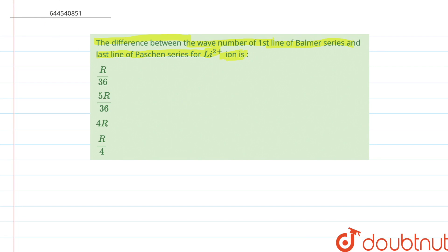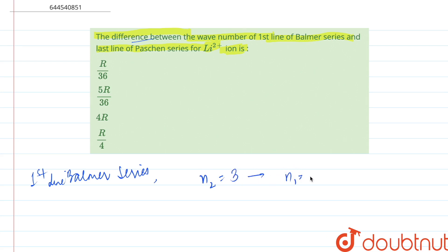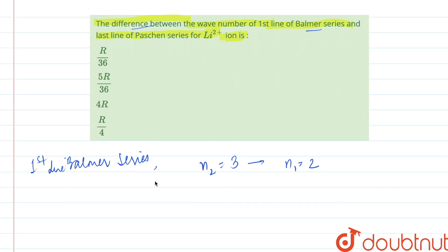In this question we have to find the difference between these two given lines. For the Balmer series, the first line would be from n2 equal to 3 to n1 equal to 2, because the Balmer series has n1 equal to 2, so the 3 to 2 transition is the first line of the Balmer series.